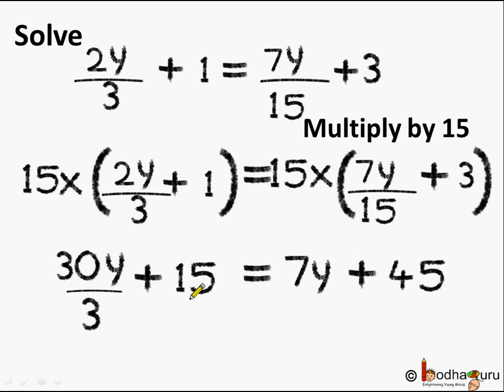So plus 15. On the RHS 15 and 15 gets cancelled when we multiply 15 by 7 by 15y. So here we get 7y. And what is 15 multiplied by 3? It is equal to 45. So this equation gets reduced to 30 by 3y plus 15 is equal to 7y plus 45.